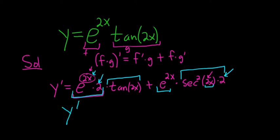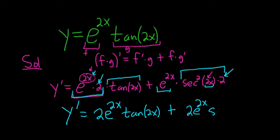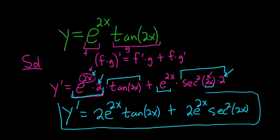Let's clean this up. So y prime is 2e to the 2x tangent 2x plus, just putting a 2 in the front, 2e to the 2x secant squared 2x. And that is the final answer. I hope that made sense.